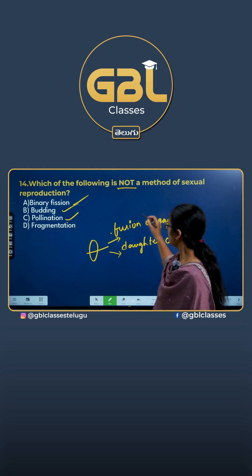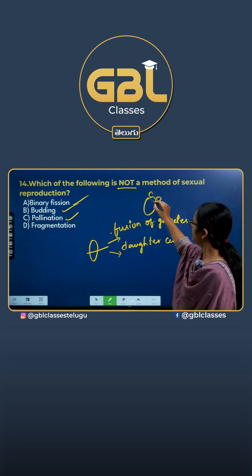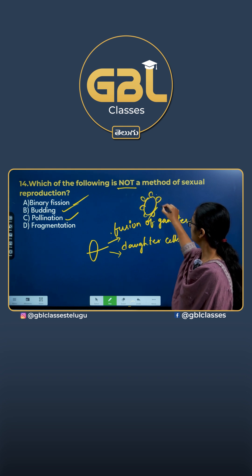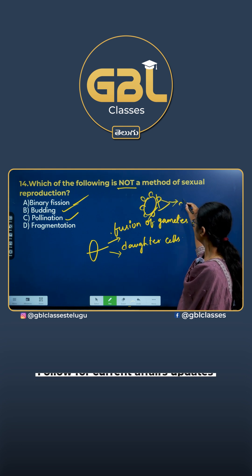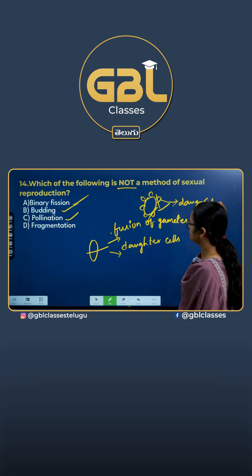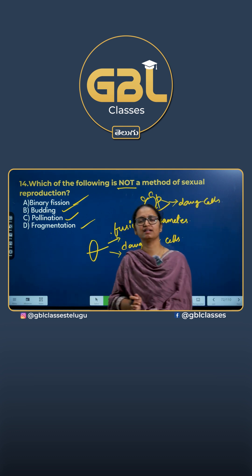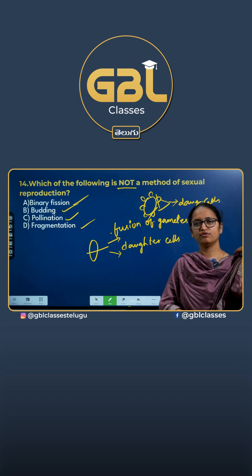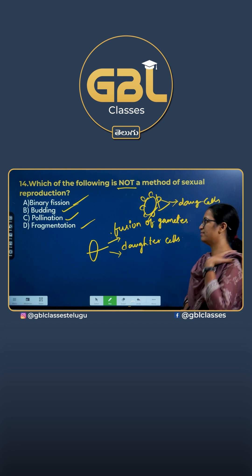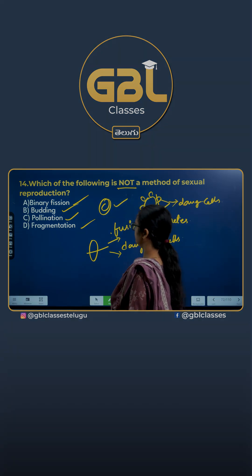In budding, the whole animal buds itself and then these are cut off to give daughter cells. In fragmentation, the body is again cut — there is no fusion of gametes. Hence the answer for this question will be pollination.